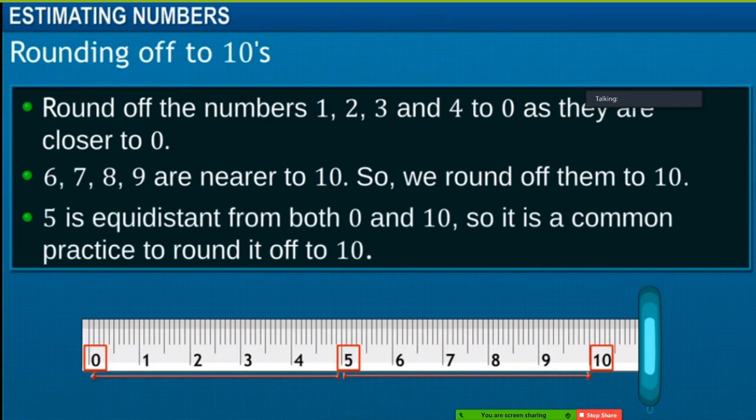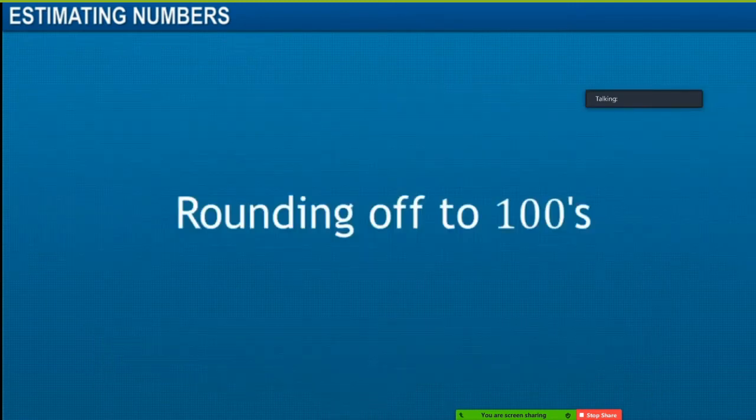Let us see how numbers are rounded to the nearest 100. The price of 2 balls is 125 rupees and 179 rupees respectively.